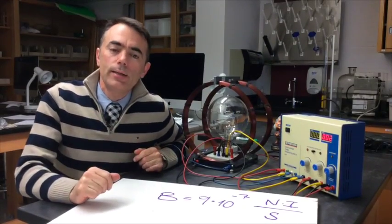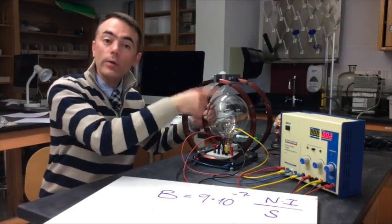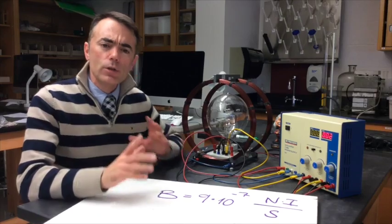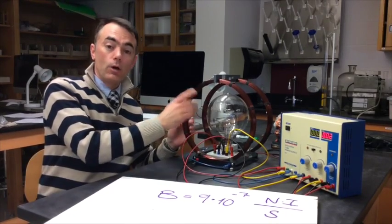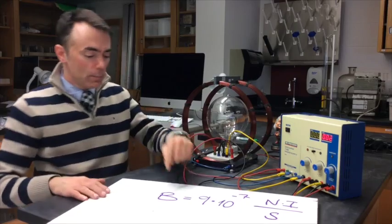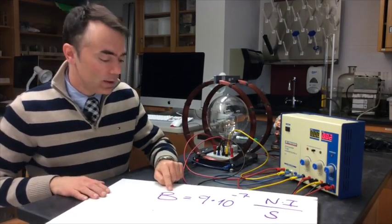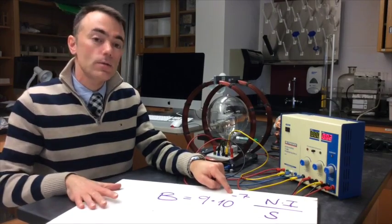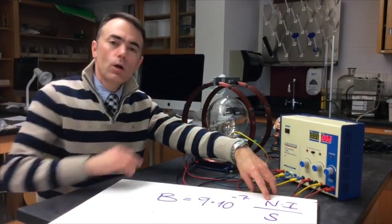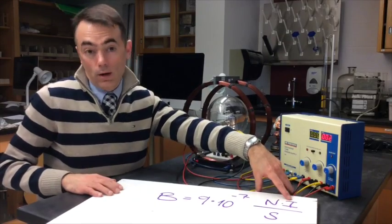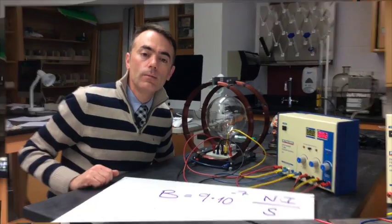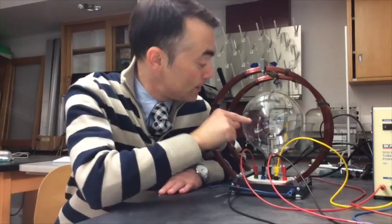You are going to generate a magnetic field using these coils by making a current go through them. The relationship between the magnetic field and the current and the number of loops is given by this expression, where the magnetic field is 9 times 10 to the minus 7, that's in the SI system, multiply by the number of coils that we have here, the current and S, which is the radius of the coil. This arrangement gives the optimum uniformity of the magnetic field at the center.